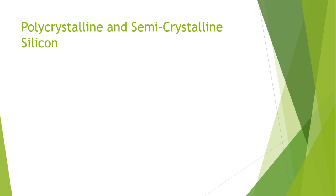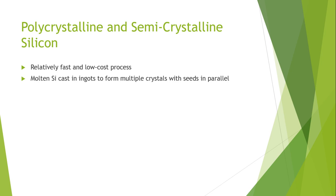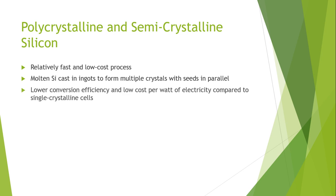Hello and Assalamu Alaikum. This is a continuation of lecture number 16. In this part of the lecture I will describe polycrystalline and semicrystalline silicon. As compared to the previous technique — the regular arrangement of single crystalline silicon — polysilicon and semicrystalline structures are relatively fast and lower cost processes. Molten silicon is cast in ingot from multiple crystals with seeds in parallel, which are heated, resulting in lower conversion efficiency and lower cost per watt of electricity.